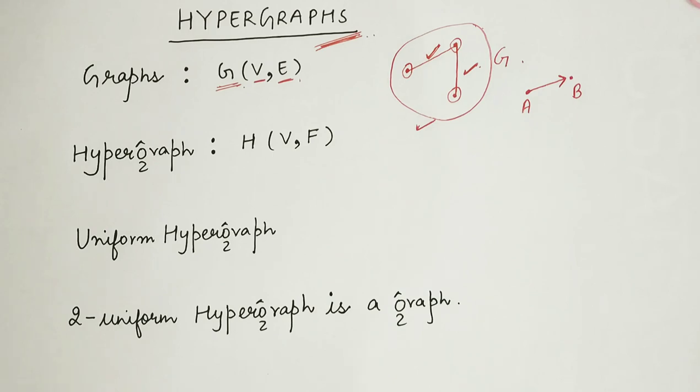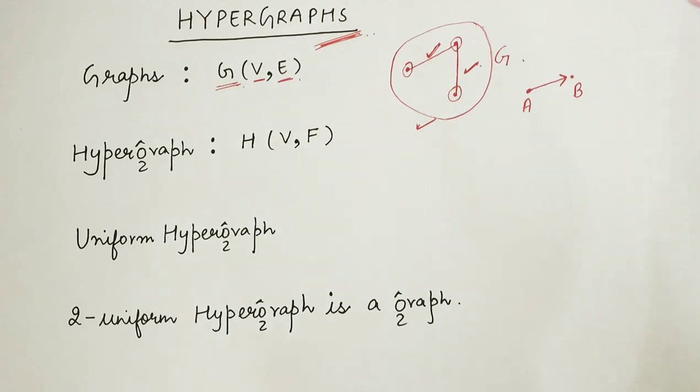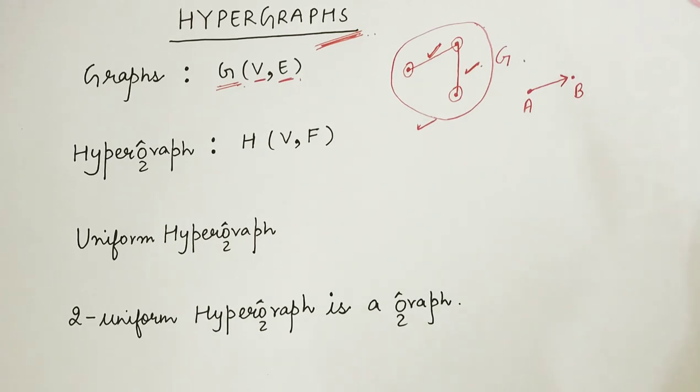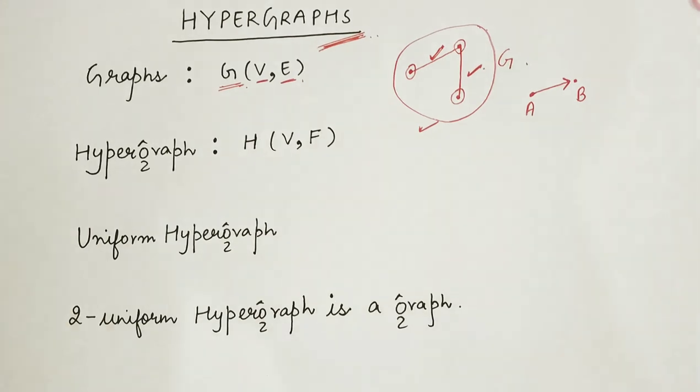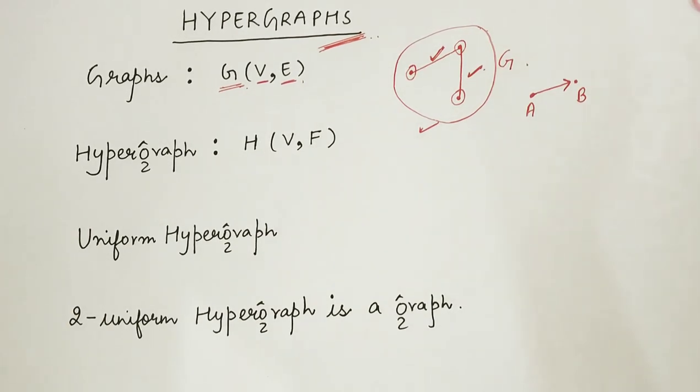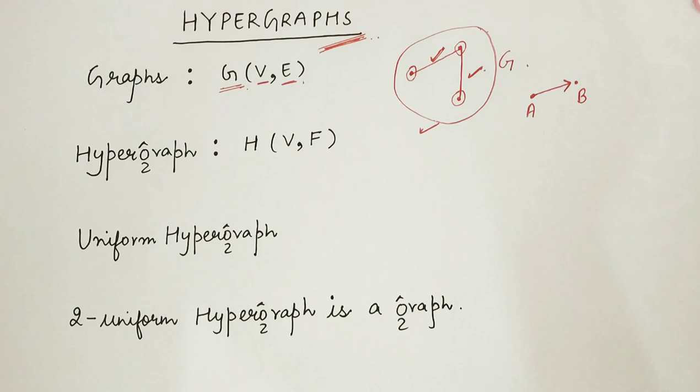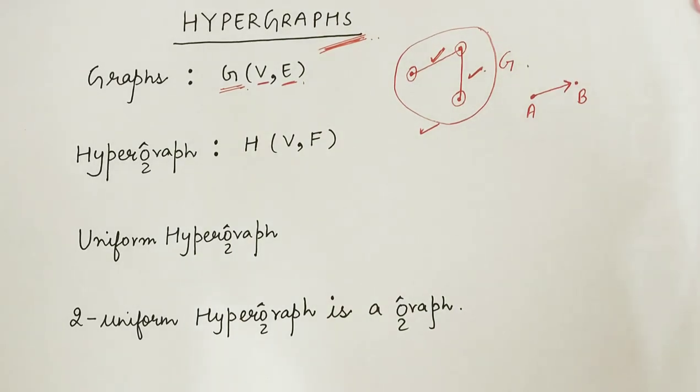Now, considering these things in mind, we will see how a hypergraph is different from a graph. By definition, a hypergraph is a generalization of a graph in which an edge can join any number of vertices. In contrast, in an ordinary graph, an edge connects exactly two vertices as we just discussed.